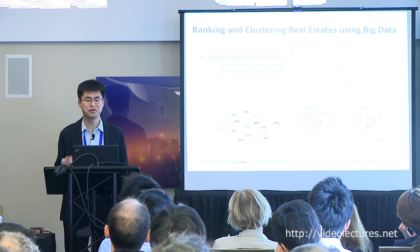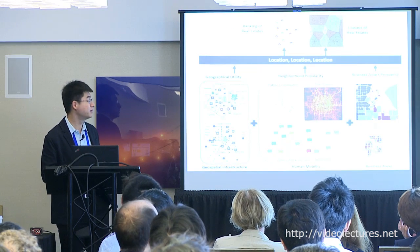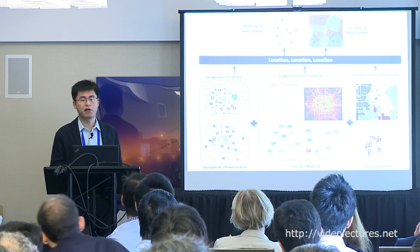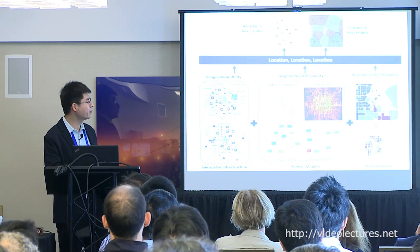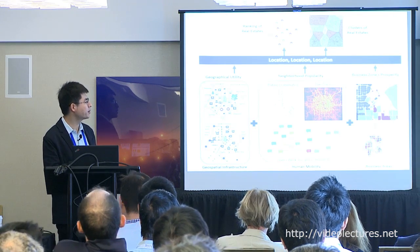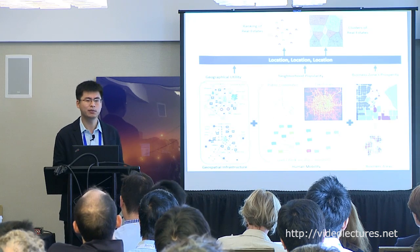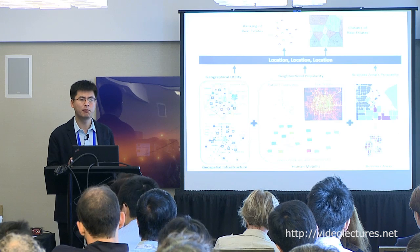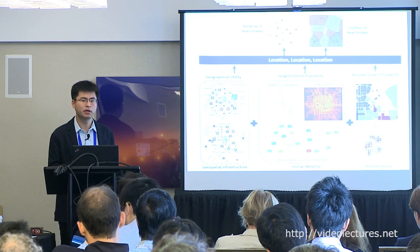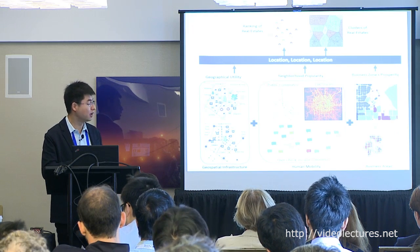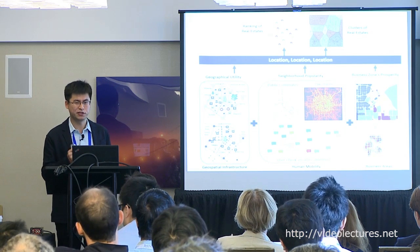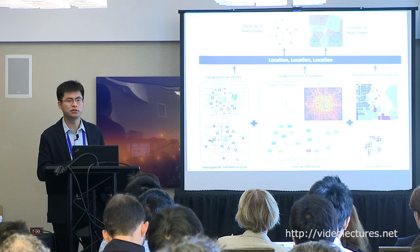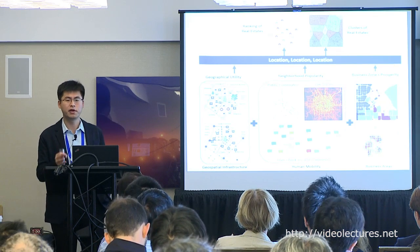How do we quantify 'location, location, location'? We use different types of data. The first 'location' is geographic utility, which can be characterized by road network data and point-of-interest data — such as how many restaurants, shopping malls, bus stops, and subway stations are in this region. These features are very important to determining real estate value, but they are static.